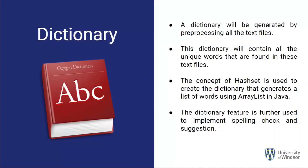I have implemented two features. The first is the dictionary, generated by pre-processing all the text files, resulting in a dictionary.txt file containing all unique, non-repeated words. The idea of a HashSet is used to construct the dictionary, producing a list of unique words using the ArrayList method in Java. This dictionary feature is further utilized to implement spell check and suggestions in our project.